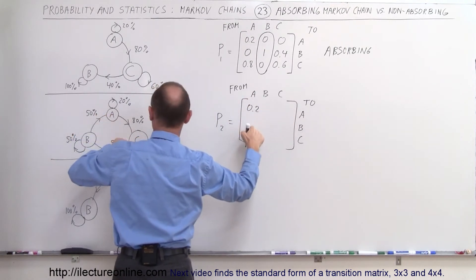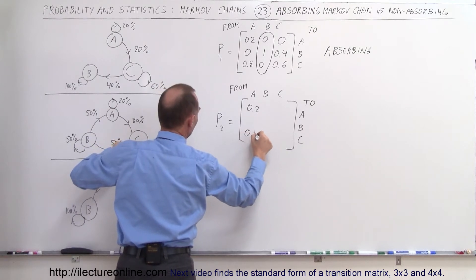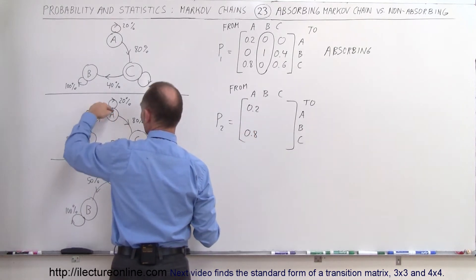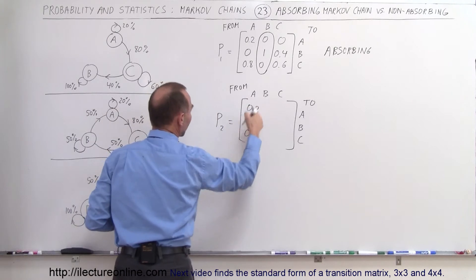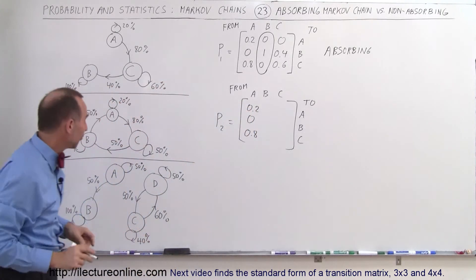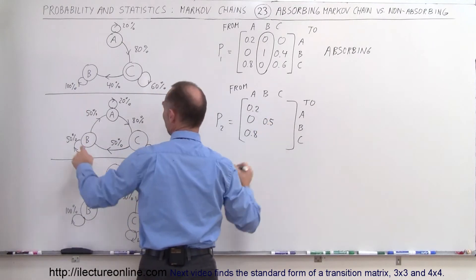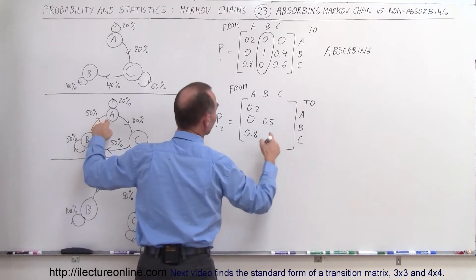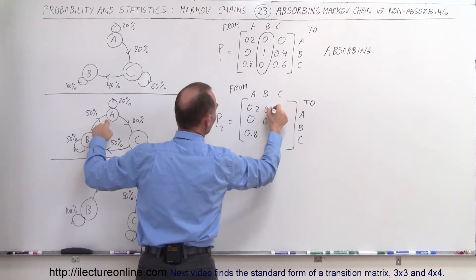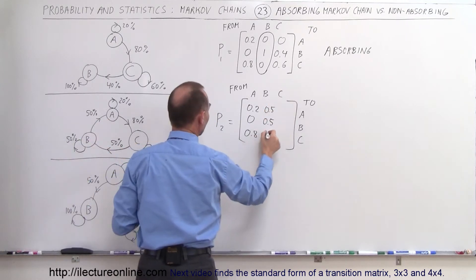That means there should be none going from A to B, and that is indeed the case because they have to add up to 1. All right, now from B. So from B, staying at B is 0.5. From B going to A is 0.5. So from B to A is 0.5, and from B to C is 0.